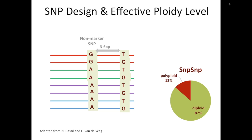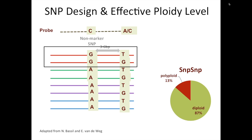The SNP-SNP approach is looking for target SNPs that are in close proximity—three or six base pairs from a non-target SNP—which can be used for the ploidy reduction strategy. In this case, what we would do is design a probe that would only anneal where there is a G at the non-marker SNP locus, and then interrogate the SNP locus on the right. As you can see, this probe would only bind to sequences within one of the subgenomes, and therefore we would be only looking at segregation in the one subgenome in red.